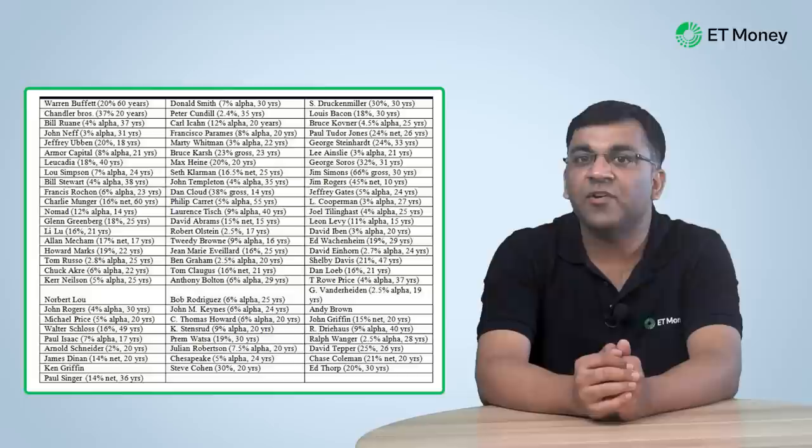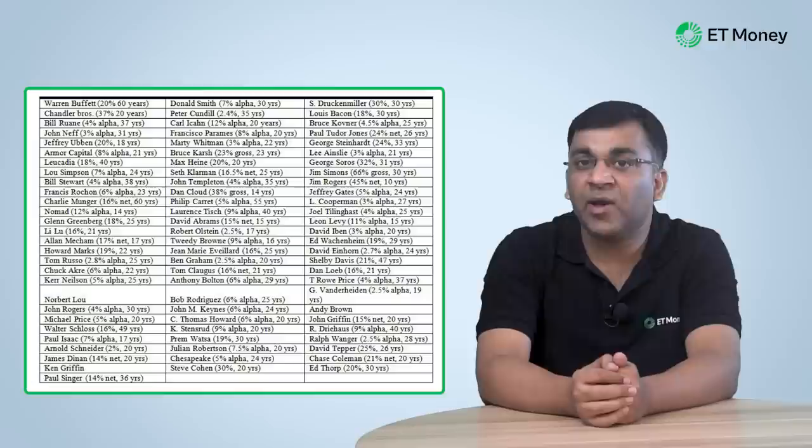Sounds a little impossible, doesn't it? Here's some data. This table shows the names and performance numbers of an august gathering of the world's greatest investing minds of the last 100 years, who have not only been growing their wealth but compounding it at incredible rates. In this video, we shall examine this ultimate formula in greater detail and apply it in an Indian context, adding to our growing arsenal of investing models and frameworks.